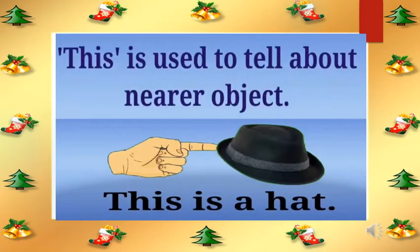We know that 'this' is used to tell about a nearer object. Now, in this picture you can see the hat — it is just near to that hand. So we will say 'this is a hat.' As it is near to the hand, that is why we say 'this is a hat.' The object which is nearer to us — we use 'this', T-H-I-S. We use the word 'this' when the object is near to us.